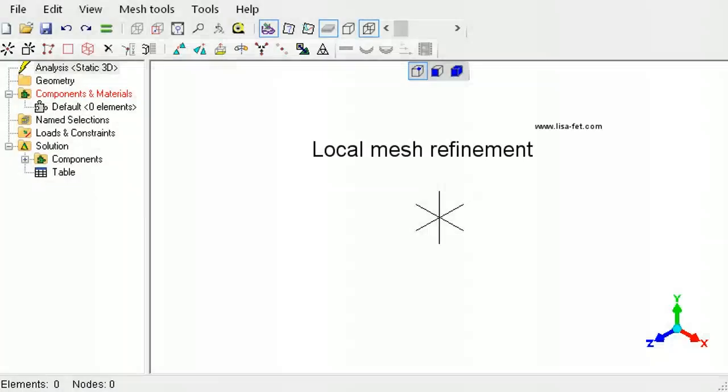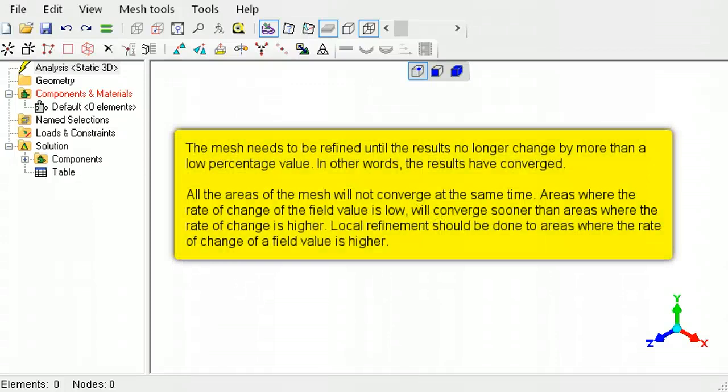This tutorial describes the local mesh refinement tools available in LISA. Local mesh refinement is an efficient way of refining a mesh without making the model unnecessarily large.